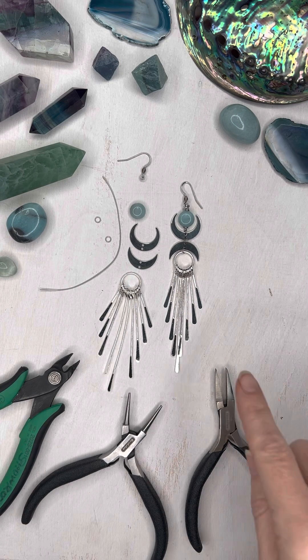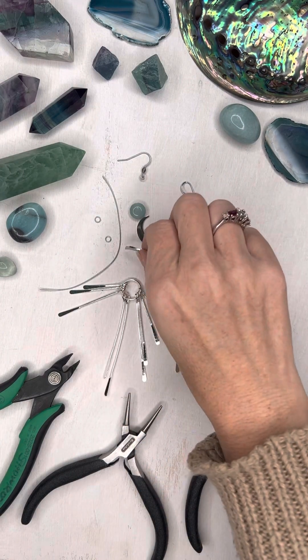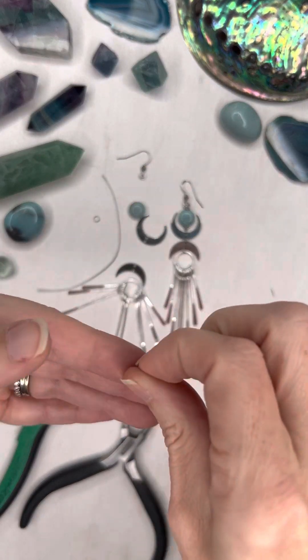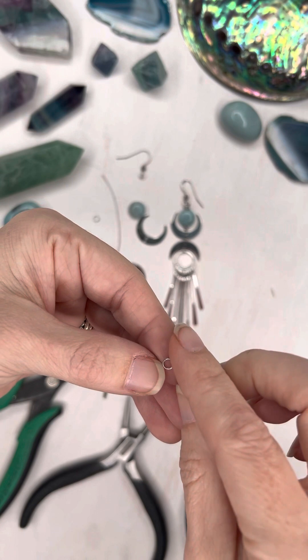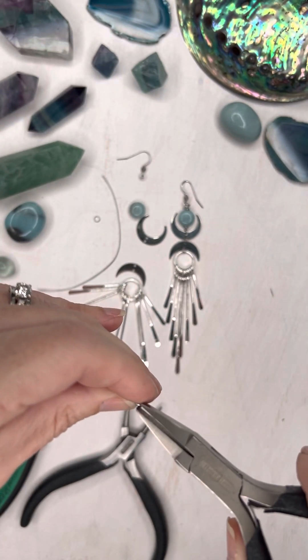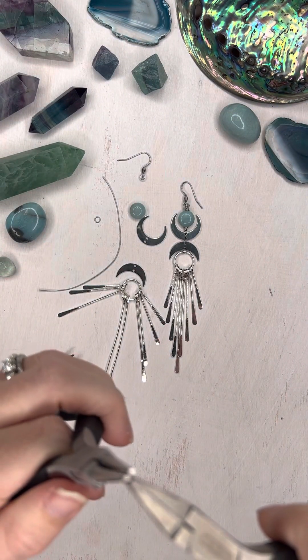First of all we're going to start by attaching the paddle to the stainless crescent moon. I'm going to do that with a jump ring. I'm going to find where the slit is in the jump ring and I want to put my pliers on either side of it and I'm going to twist it open.